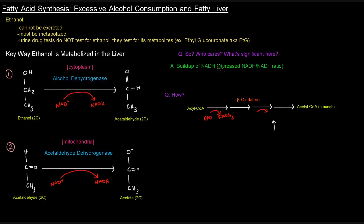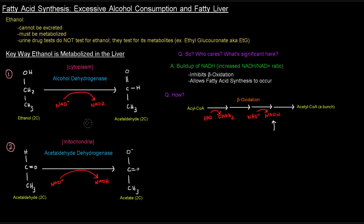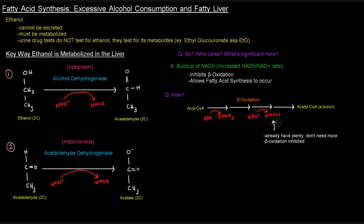This buildup of NADH does two things: it inhibits beta-oxidation, and it allows fatty acid synthesis to occur. In beta-oxidation, we produce FADH2s and NADHs. If excessive alcohol consumption causes these dehydrogenase reactions to occur frequently, we already have a buildup of NADH. Beta-oxidation therefore doesn't need to happen — there's no sense in creating more NADH when there's already plenty around — so beta-oxidation is inhibited.